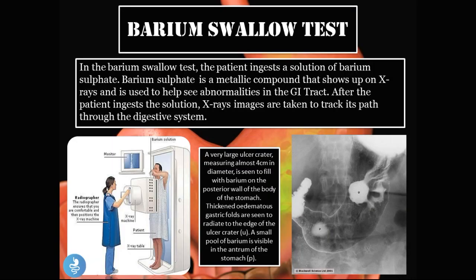Another test used to diagnose gastric or duodenal ulcers is the barium swallow test. The patient ingests a solution of barium sulfate, a metallic compound that shows up on X-rays and helps identify abnormalities in the GI tract. X-ray images are then taken to track its path through the digestive system. Any localized collections of barium within the stomach or small intestine indicate an ulcer in that area — you can see those very opaque circular areas within the stomach cavity.